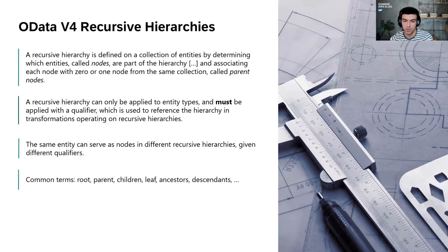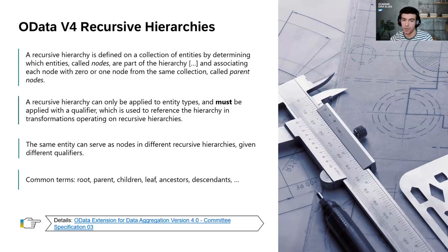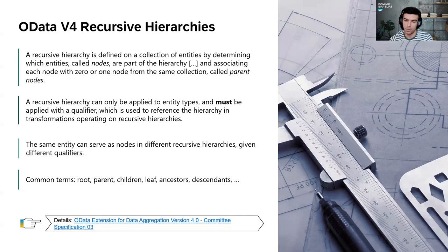In OData, the same entity can serve as nodes in different recursive hierarchies given different qualifiers. For example, with an employee dataset in a matrix organization, you can view the same data using the management view or the project view — those are different hierarchies on the same entity set. OData uses common terms: root, parent, children, leaf, ancestors, descendants — no rocket science behind it. Everything mentioned here and in the following slides can be found in the documentation, linked or searchable by the blue-highlighted keywords.